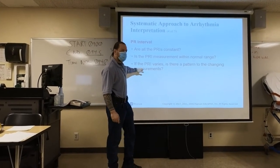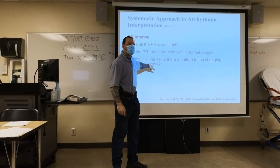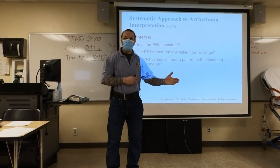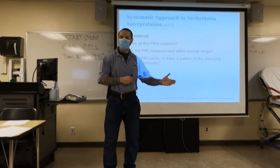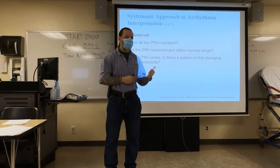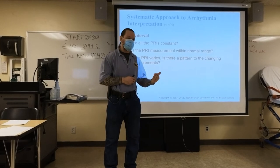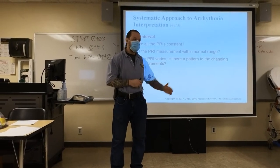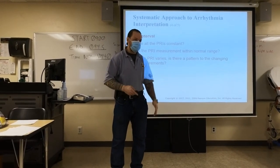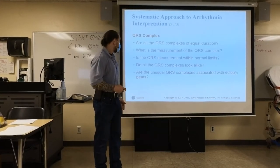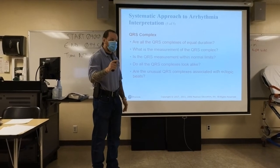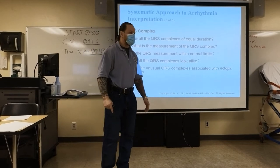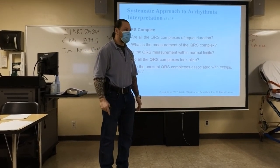PR interval: the normal range is 0.12 to 0.20 seconds. The moment we exceed 0.20, perhaps we're dealing with a heart block — first degree heart block comes to mind. That's the only heart block where you have to give an underlying rhythm. You cannot just say first degree heart block; you've got to say sinus brady with first degree, sinus rhythm with first degree, or sinus tach with first degree. For second degree and third degree, you can just state the heart block. QRS complex normal duration is less than or equal to 0.12 seconds; greater than that likely indicates a ventricular origin or a bundle branch block.